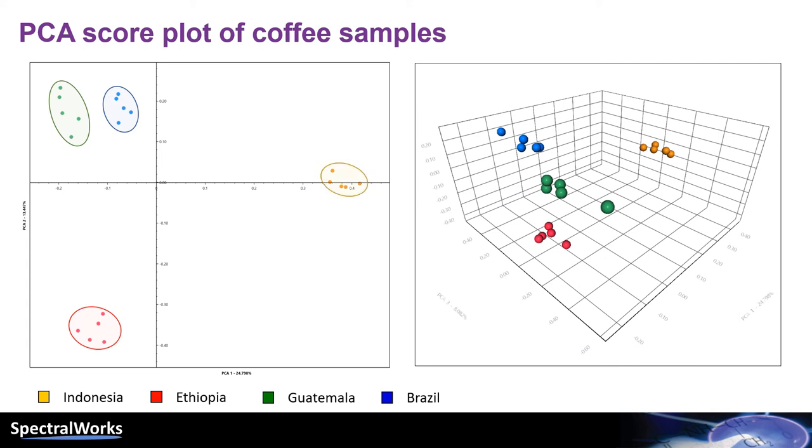Furthermore, we can see that the Brazilian and Guatemalan samples are very similar to each other. We haven't had an opportunity to explore this yet, but the obvious theory is the similarity in the soil between Brazil and Guatemala. We also note that Ethiopia is the only country who exclusively grows the Arabica beans.